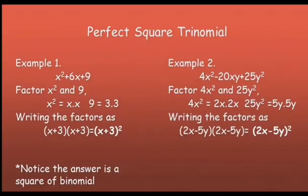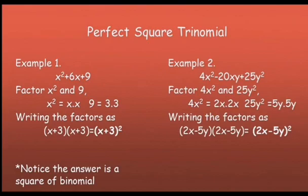Example number 2: 4x squared minus 20xy plus 25y squared. The factors of 4x squared are 2x and 2x; the factors of 25y squared are 5y and 5y. Writing the factors as the quantity 2x minus 5y times the quantity 2x minus 5y, we have the quantity 2x minus 5y squared. Notice the answer is the square of a binomial.